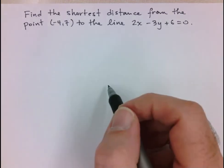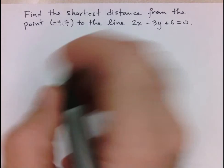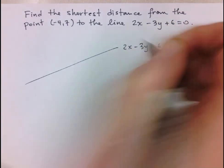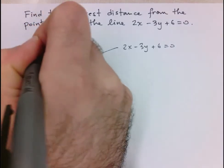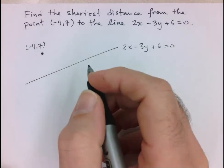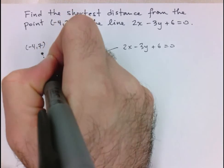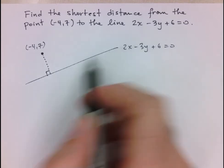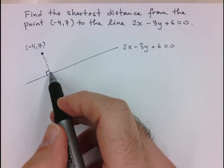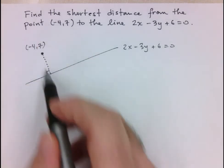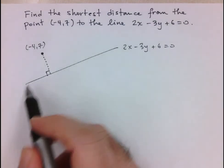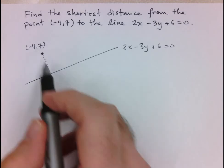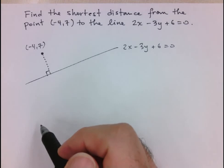You would have actually solved problems like this back in grade 10, but it would have been quite a long and arduous process. So I'm going to start with a picture. Say this is my line 2x minus 3y plus 6 equals 0, and say I have my point here, negative 4, 7. Since we want the shortest distance from the point to the line, that will be the distance that is perpendicular to the line. The way you would have done this in grade 10 is you would have found the slope of this line, found its negative reciprocal, used that slope and this point to find the equation of the line that crosses it. Once you do that, you find the point of intersection between those two lines by solving a system of equations. And then once you have the point of intersection, you use the distance formula to calculate the distance between those two points.